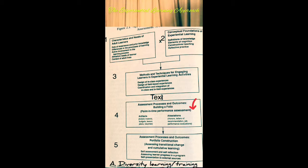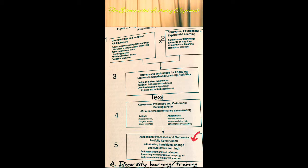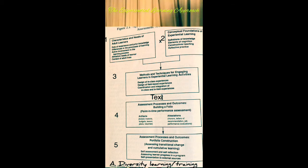For Box four, applying diversity training to assessment processes and outcomes — building a portfolio — we look at the products of modeling activities, such as conceptual maps that interrelate participants' personal perceptions, attitudes, and feelings about other cultures, religions, or lifestyles. For Box five, portfolio construction requires self-assessment portfolios reflecting changes in attitudes or perceptions, and self-presentation portfolios evidencing sensitivity to cultural diversity and human rights, including testimonials and service awards.